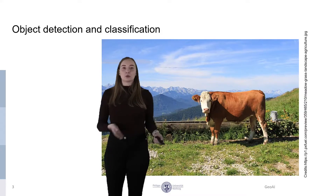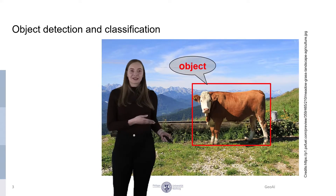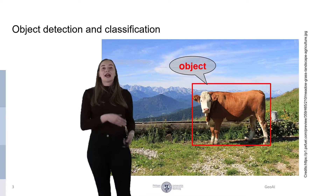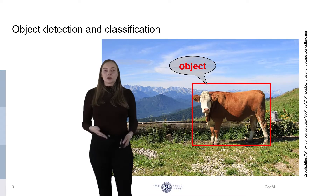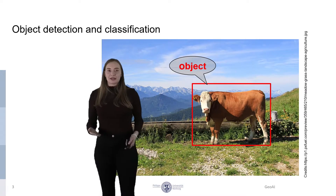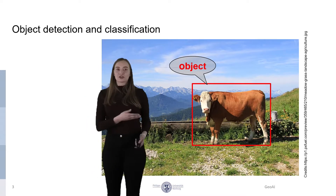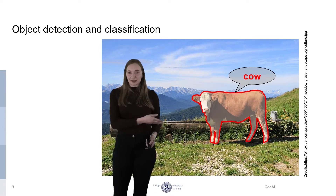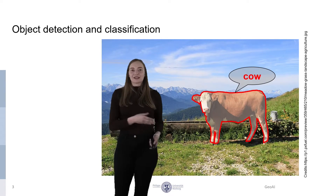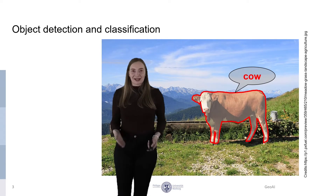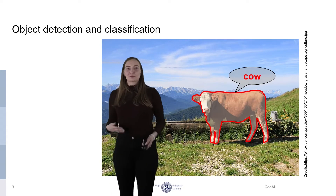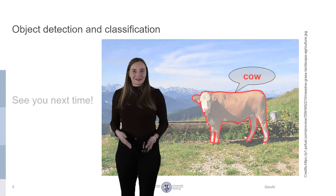The task is quite simple for the human eye. We want to know where the cow is — this is the object we want to detect — and then we also want to classify it. We have an object and now we know this is a cow, and this is the task at hand that we want to face today.